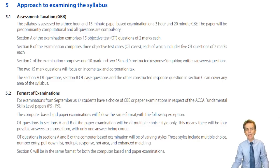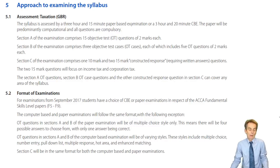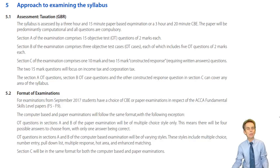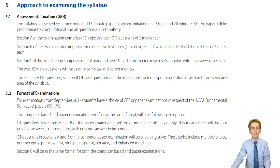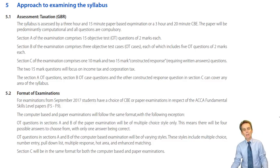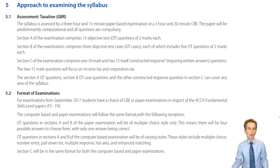Closely aligned with income tax, specifically for some types of income — earned income, whether that be employment or self-employment — we have national insurance contributions as well. The other personal taxes are what we may know as the capital taxes: capital gains tax and inheritance tax. In relation to those personal taxes, we're going to see individual questions in terms of Section B and Section C questions, as well as individual two-mark objective testing questions in Section A.